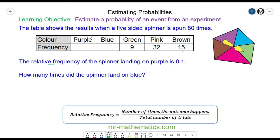So we know the relative frequency of a purple is 0.1. So one-tenth of the 80 times it was spun, it landed on a purple. So it landed on purple eight times.